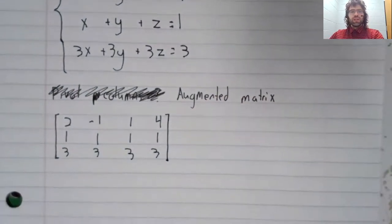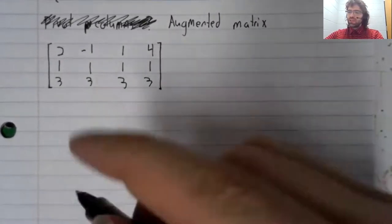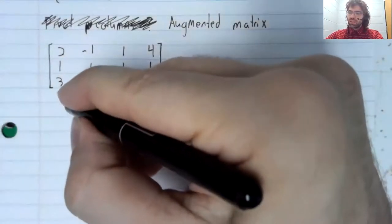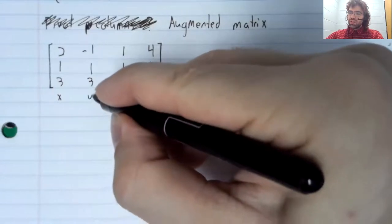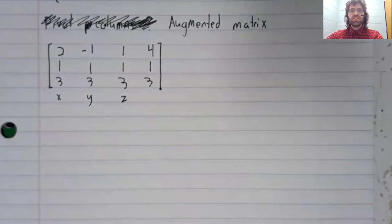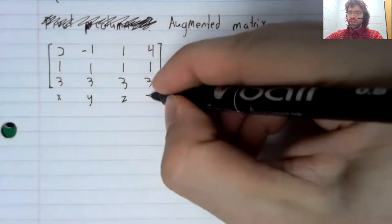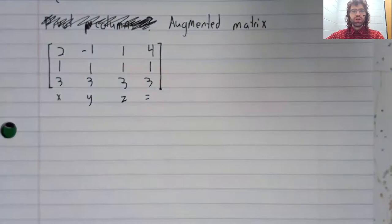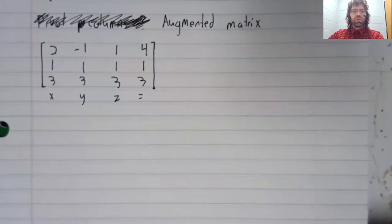And now remember that in this augmented matrix, these columns represent variables, except for the last column, which represents equality.